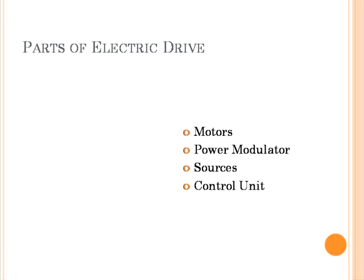Controls for a power modulator are provided in the control unit. The nature of the control unit for a particular drive depends on the power modulator used. When semiconductor converters are used, the control unit consists of firing circuits employing linear and digital integrated circuits and resistors, and a microprocessor when sophisticated control is used. When control of switching circuits is required, the function of the control unit is to provide sequencing and interlocking. Solid state relays are used, and when control is complex, PLCs can be used for this purpose.